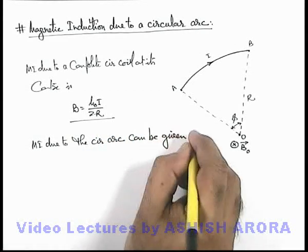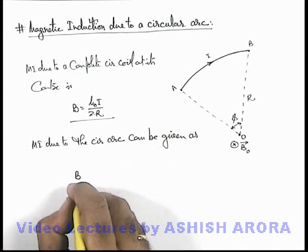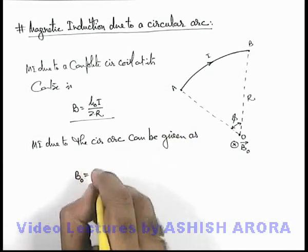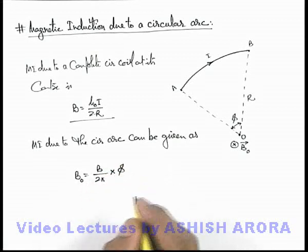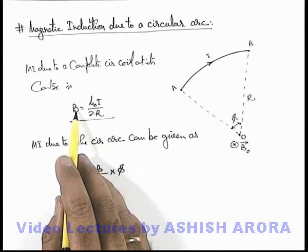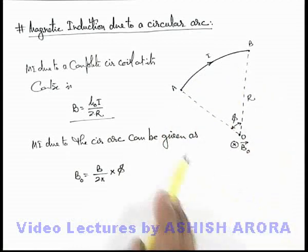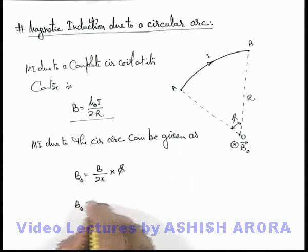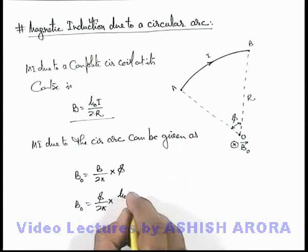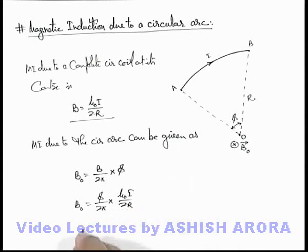Can be given as magnetic induction B_o equals B over 2 pi multiplied by phi, which equals mu not i by 2r, which can be written as mu not i phi over 4 pi r.